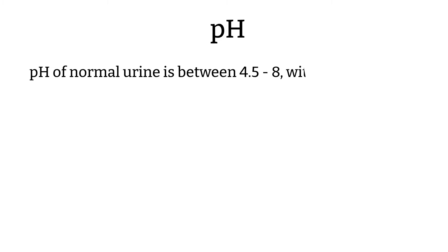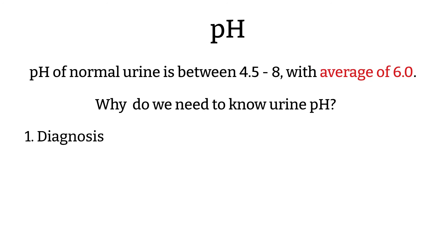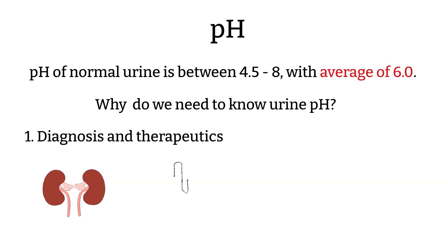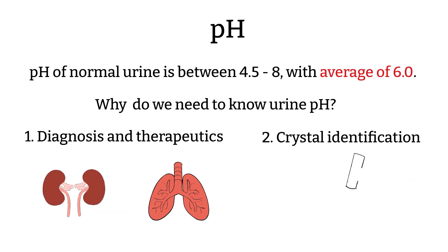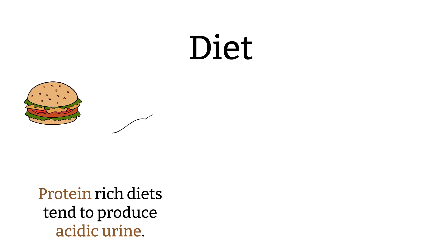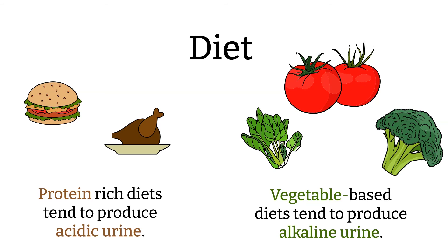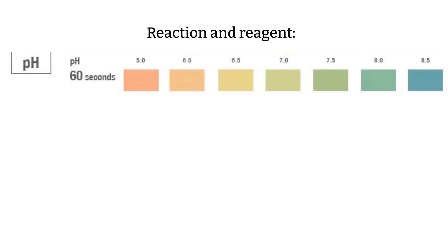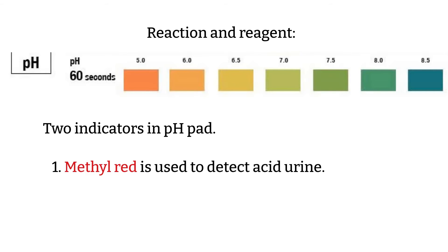pH. The pH of normal urine is between 4.5 to 8 with an average of 6. There are two main reasons for knowing urine pH: one is for diagnostic and therapeutic purposes, since the kidney is one of the two organs that regulate acid and base in our body. Another is to help with crystal formation identification found during the microscopic part of urine analysis. Your kidneys vary the urine pH to compensate for your diet and metabolism. A protein-rich diet tends to produce acidic urine, while a vegetable-based diet tends to produce alkaline urine. One indicator changes from orange to yellow when the urine pH is 5 to 6.5, and another changes from green to blue when the pH is between 7 to 8.5.